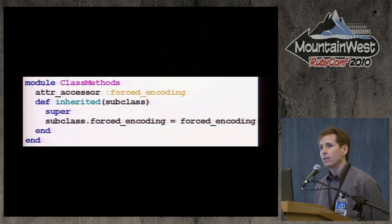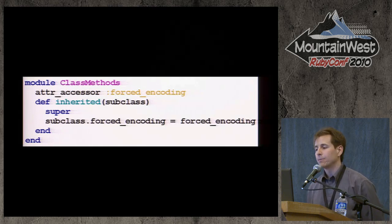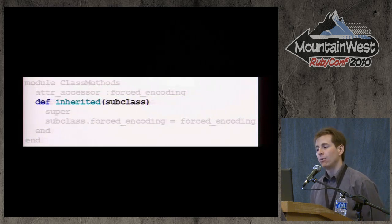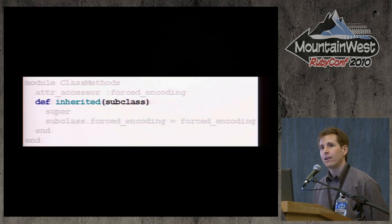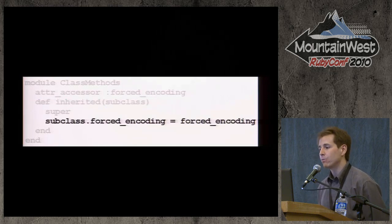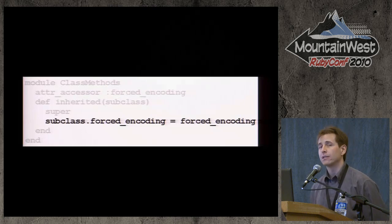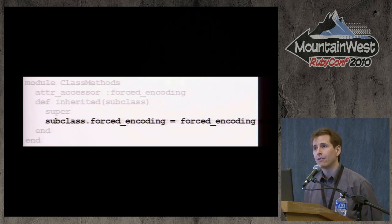This example of the copying approach is pulled from Sequel's force_encoding plugin. In Ruby, when subclasses are created, the superclass's inherited method is called with the subclass as an argument. So you can override the inherited method in your class, call super, and then set values in the subclass. In this case, the value of forced_encoding is copied from the superclass to the subclass. The advantage is that lookups in the subclass are just as fast as in the superclass. The possible disadvantage is that modifications to the superclass after subclass creation are not copied to the subclass.